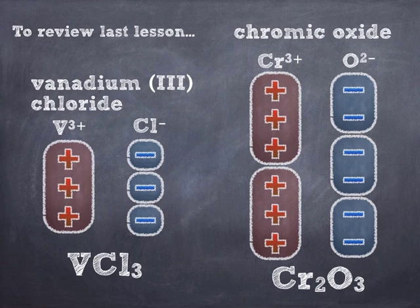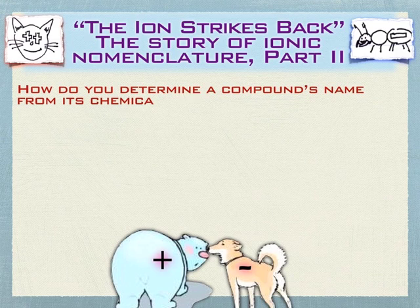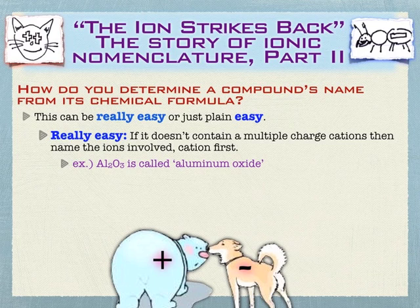Today we'll go back the other way — take a formula and get a name from it. This can be really easy or just easy. It's really easy if you don't have multiple-charge cations, because then you just read what you have. Telling a chemist what cations and anions you have in a compound is enough because they can figure out the rest. When you see aluminum and oxygen as single-charge ions, you can just say aluminum oxide. A chemist will know aluminum is plus 3 and oxide is minus 2 and can figure out the subscripts.